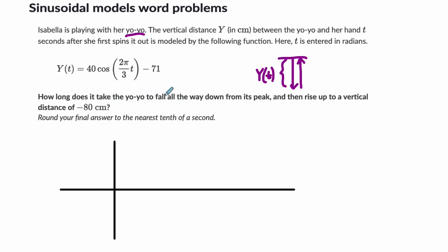How long does it take for the yo-yo to fall all the way down from its peak and then rise up to a vertical distance of negative 80 centimeters? Where is its peak? We can certainly enter it on a calculator, but we don't need to here, because the peak will be the highest point it reaches. To find that, we can just say, take the midline and then add the amplitude, which is the absolute value of 40.